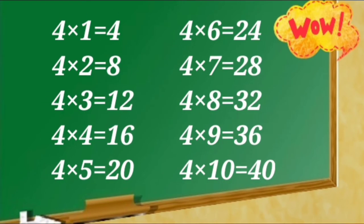4 ones are 4, 4 twos are 8, 4 threes are 12, 4 fours are 16, 4 fives are 20, 4 sixes are 24, 4 sevens are 28, 4 eights are 32, 4 nines are 36, 4 tens are 40.